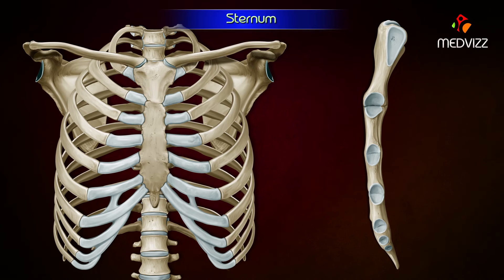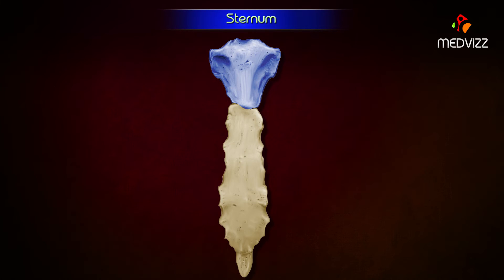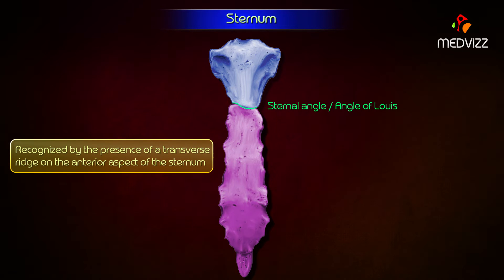The lateral border presents two articular facets. The upper facet articulates with the first costal cartilage to form a primary cartilaginous joint. The lower demifacet, along with the other demifacet in the body of the sternum, articulates with the second costal cartilage. The manubrium makes a slight angle with the body at this junction, called the sternal angle or angle of Louis, recognized by the presence of a transverse ridge on the anterior aspect of the sternum.